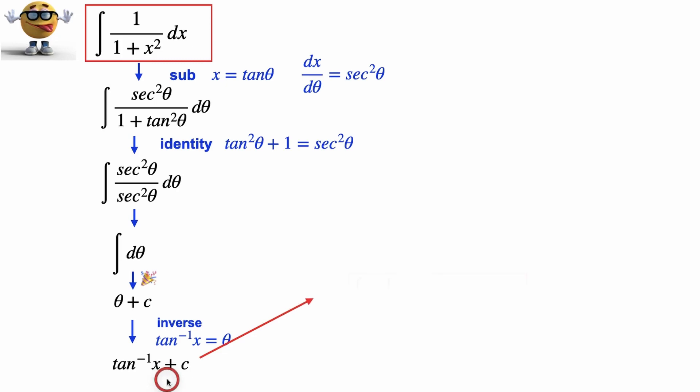So we substitute that in, and this, my friends, is our integral in all its glory. The integral of 1 divided by 1 plus x squared equals arctan x plus our integration constant, and we're done. Bob's your uncle.